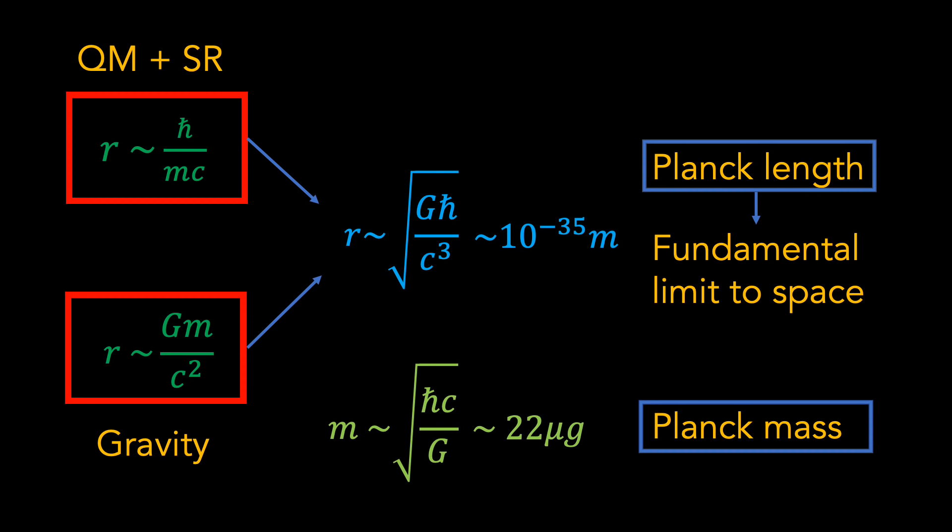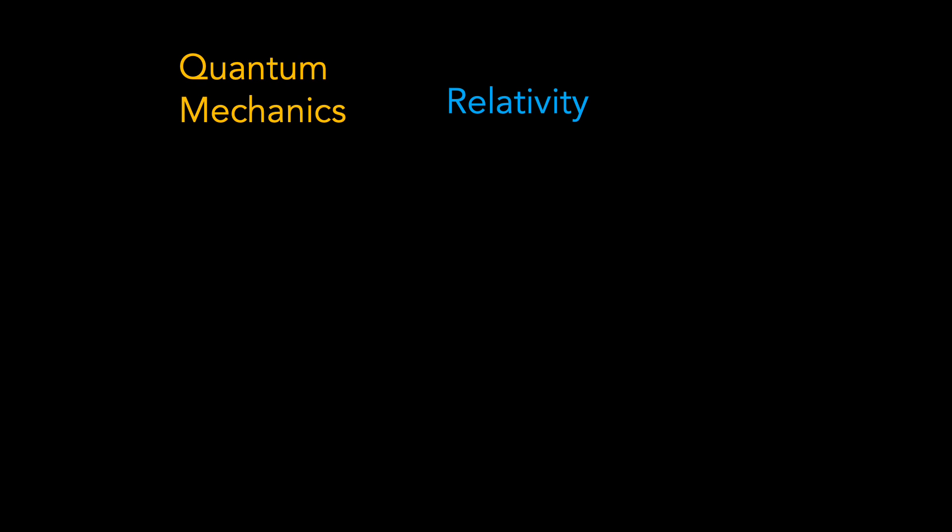You might be justified in thinking that this has all been a bit hand-wavy and imprecise, but these are exactly the kind of thought experiments that theoretical physicists consider when trying to understand the need for a new quantum theory of gravity. It would also be illustrative to show how we can arrive at the same result from a slightly different perspective. When theoretical physicists think about the fundamental laws of nature, there are three broad theories that spring to mind: quantum mechanics, which helps us describe the microscopic universe; Einstein's theory of special relativity, which helps us describe fast-moving objects and the relationship between mass and energy; and gravity, which plays an important role in the large-scale structure of the universe.